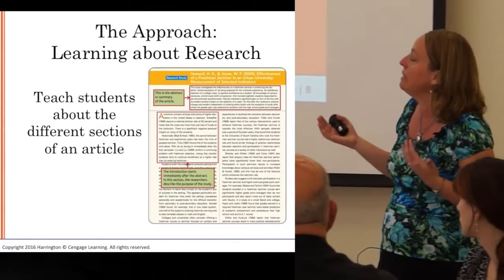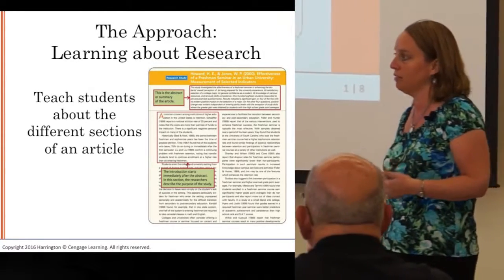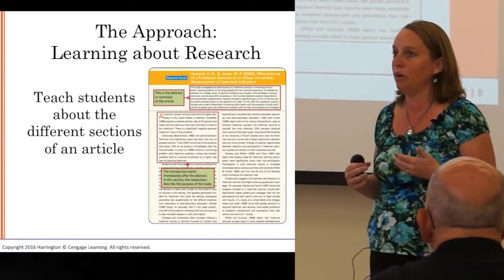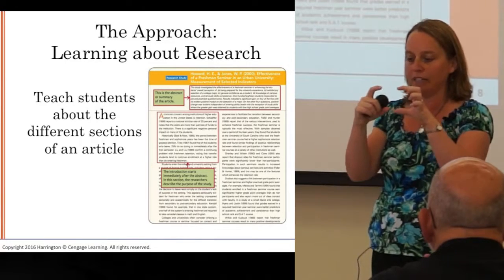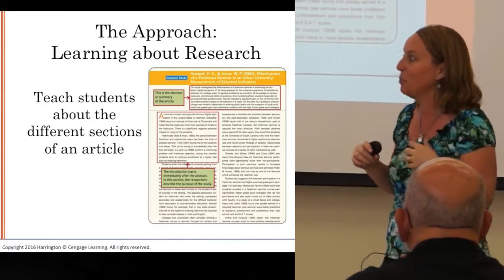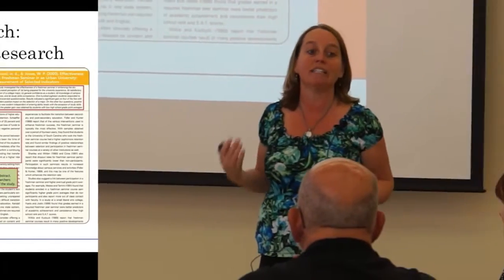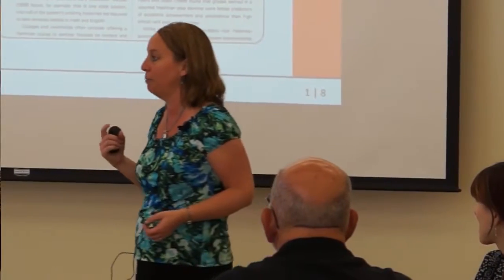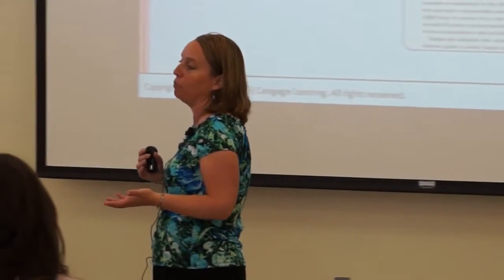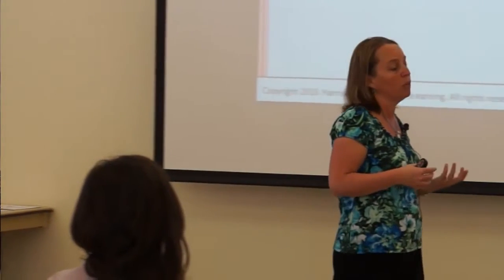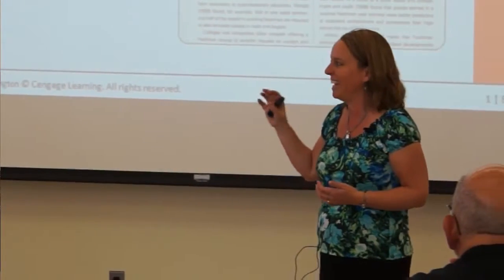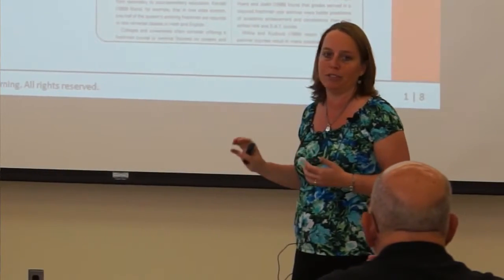The first thing is that we need to teach students about the different parts of a research article. They don't know that the little summary on top called the abstract is really, really important. One of the most important things we can do is highlight the importance of that part. Chapter 1 does a nice description of all the different elements of a research article, so they know what kind of information can be found in the abstract versus the introduction versus the method, results, and discussion sections.